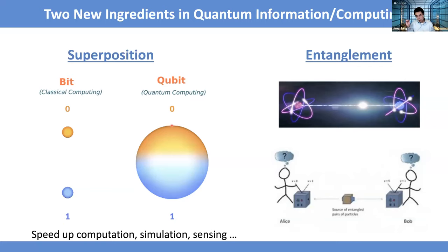If you measure one in left circular polarization, then the other one will be in right circular. So if you measure one, you immediately know what the other one must be. This ultra-strong correlation holds regardless of which basis you measure in — if you measure one photon in a certain state, the other photon must be in the orthogonal state on the other side.